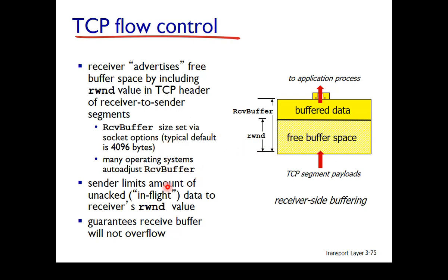The sender will limit the amount of unacknowledged data to be less than or equal to the receiver's receive window value. This will then guarantee that the receiver's buffer will not overflow.